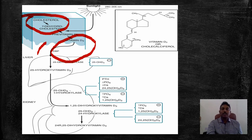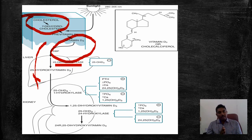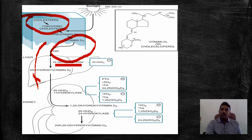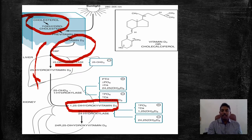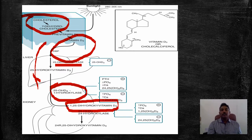In the skin, cholesterol gets converted into vitamin D3 in the presence of sunlight. This vitamin D3 is transported to the liver where, in the presence of the enzyme 25-hydroxylase, it gets hydroxylated to form 25-hydroxy vitamin D3. From the liver, it then goes to the kidney where it gets converted into 1,25-dihydroxy vitamin D3 in the presence of the enzyme 1-alpha-hydroxylase.